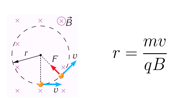The radius is proportional to the mass and velocity — the bigger the mass and velocity, the larger the radius. The radius of a charged particle's path is inversely proportional to the charge and the magnetic field strength, so the bigger the charge or the magnetic field, the smaller the radius.